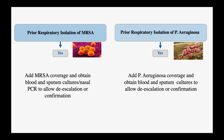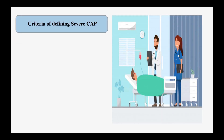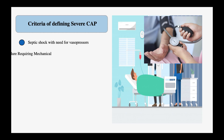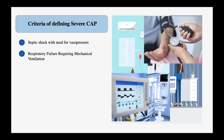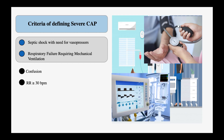The next step is to define if our patient has severe community-acquired pneumonia or not. The 2019 guidelines use the 2007 criteria for severe CAP. If the patient meets one of the two major criteria — septic shock with need for vasopressors, or respiratory failure with need for mechanical ventilation — they qualify as severe CAP. Or if the patient meets three of the minor criteria, which include confusion or altered mental status, respiratory rate ≥30 breaths per minute, or hypotension requiring fluid resuscitation.